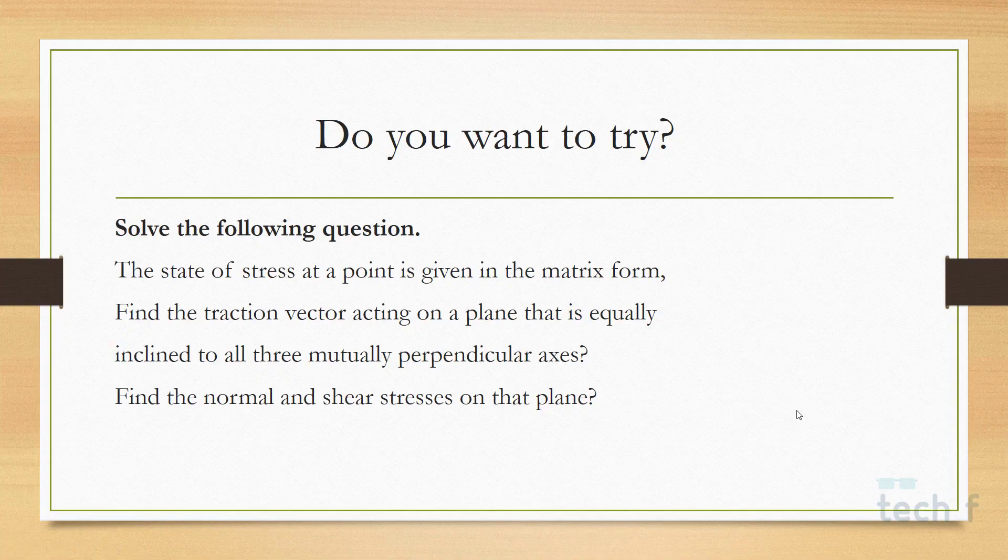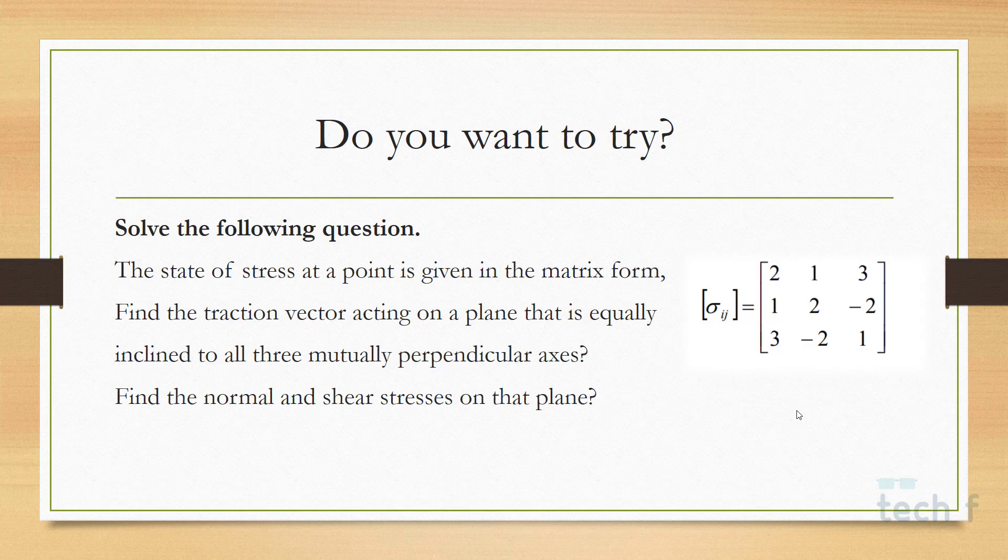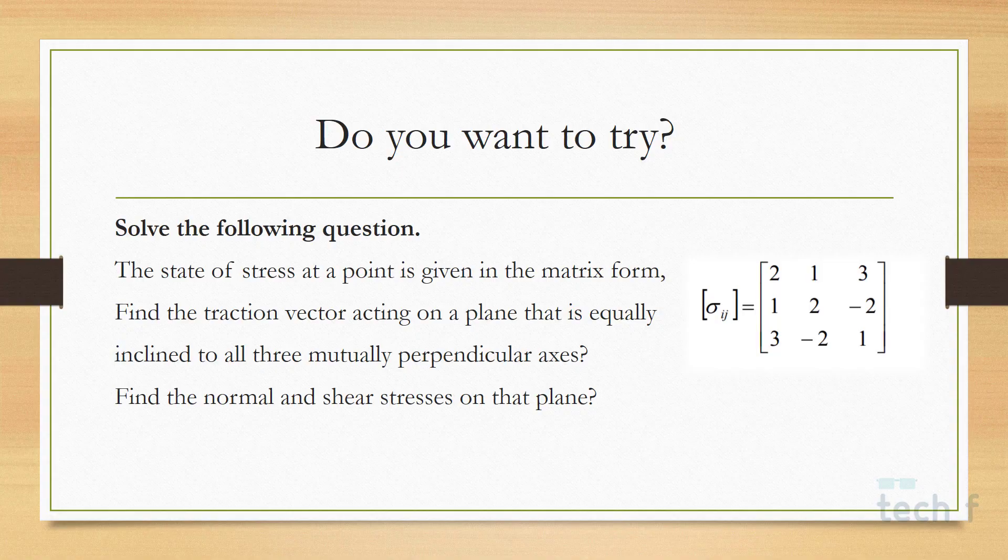Let's practice what we learned. In this question, we are given the state of stress at a point in matrix form, that is σᵢⱼ. It's also mentioned that the traction vector is acting on a plane which is equally inclined to all three mutually perpendicular axes. From this we can find the normal components n₁, n₂, n₃, and by multiplying σᵢⱼ and the normal vector, we can find the traction vector. From there, we can easily find the normal and shear stresses acting on that particular plane.